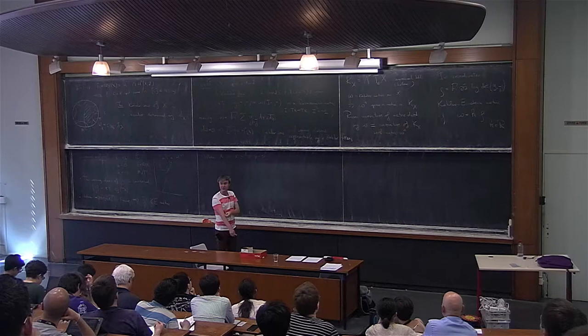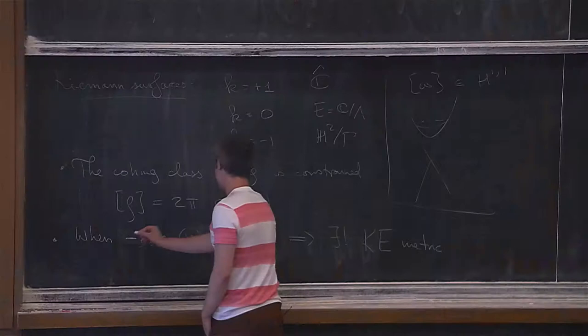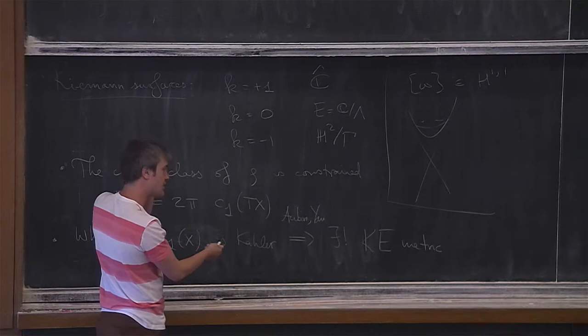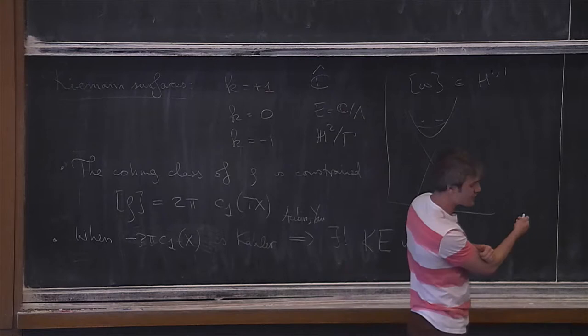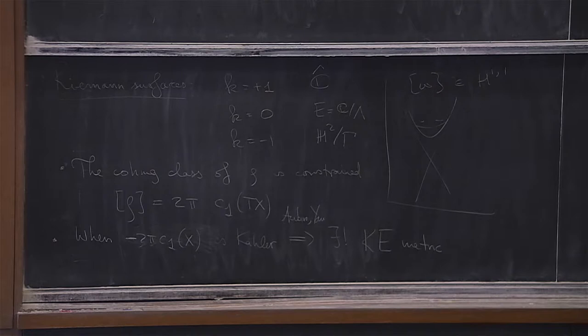For K3 surfaces, you want to solve an equation of the following type. It turns out that what you have to do is solve the Monge-Ampère equation. Let me state the theorem in the most general form — this is due to Yau. For any smooth function f on X and any Kähler metric omega, there exists phi in C^\infty(X) such that (omega + i d d-bar phi)^n equals e^f times omega^n, provided the integrals on both sides agree.